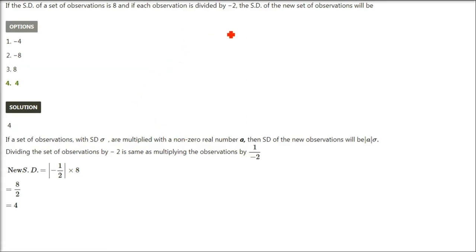If the standard deviation of a set of observations is 8 and if each observation is divided by minus 2, the standard deviation of the new set of observations will be what? Every observation is divided by minus 2. Essentially you are multiplying by minus half.